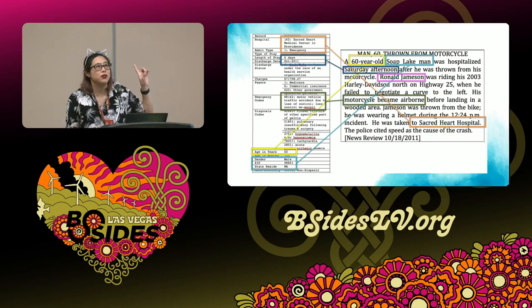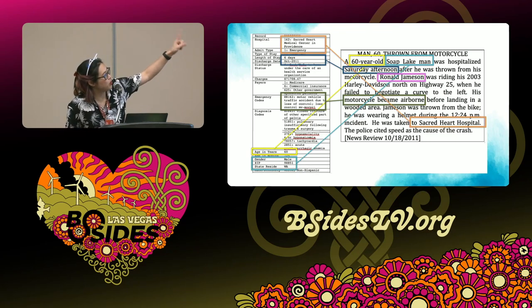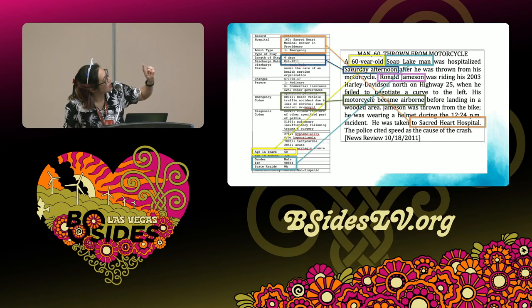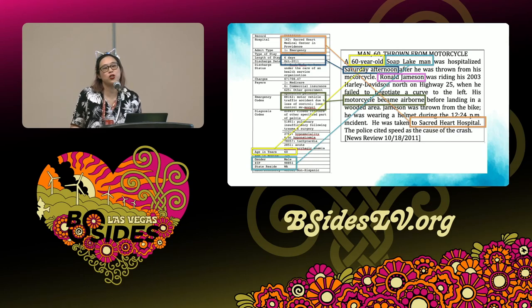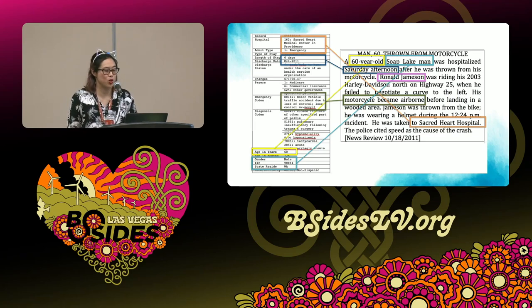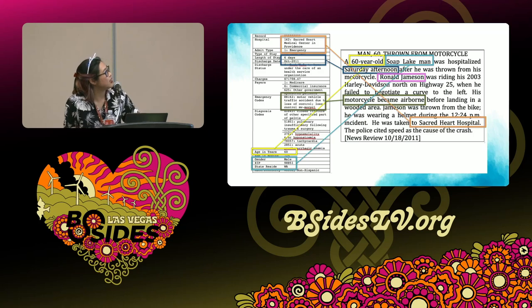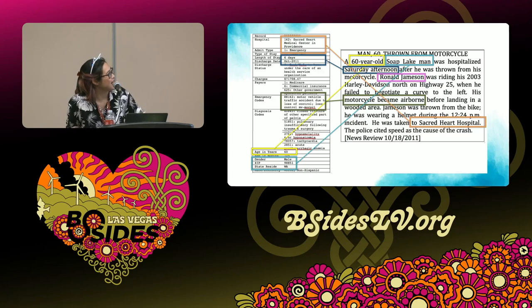Here is one example of that. In the newspaper you can see in yellow that this was a 60-year-old man, which matched back to the record. In teal, the location is Soap Lake, which matched back to the zip code. In blue, the time of the accident — Saturday afternoon — matched how this poor soul got in the accident. They had a motorcycle accident, which is in green. The treatment hospital in orange is Sacred Heart Hospital. And in pink, you can see that the person's name is Ronald Jameson. Now that we know it's Ronald Jameson, we can also see in the patient demographic set that he was charged $71,000 for care, and he has a slew of other things he's dealing with, like pulmonary problems from this accident.